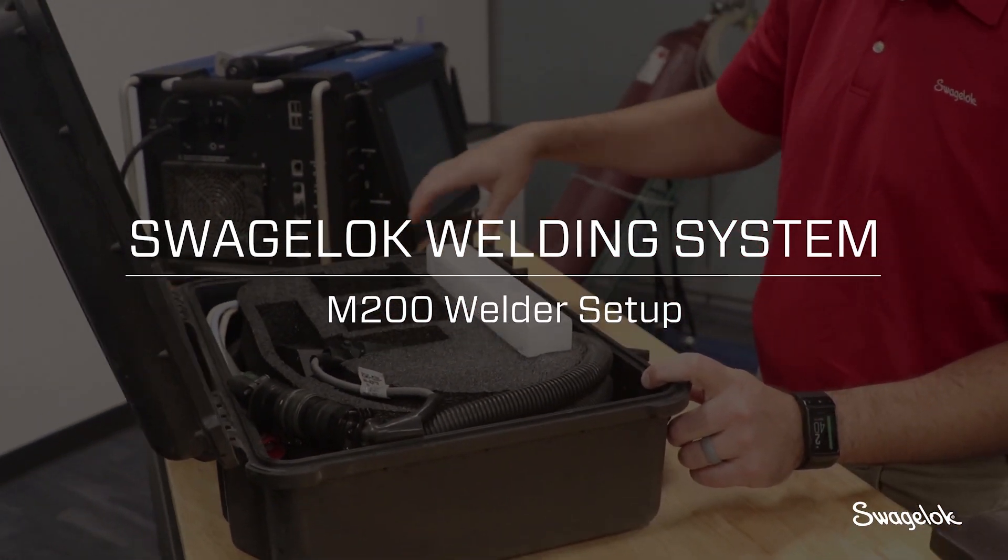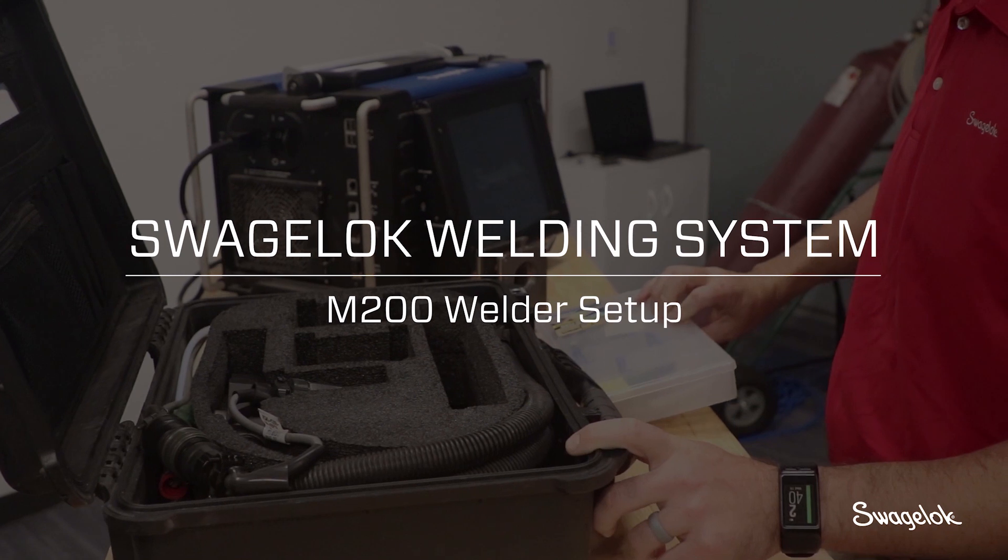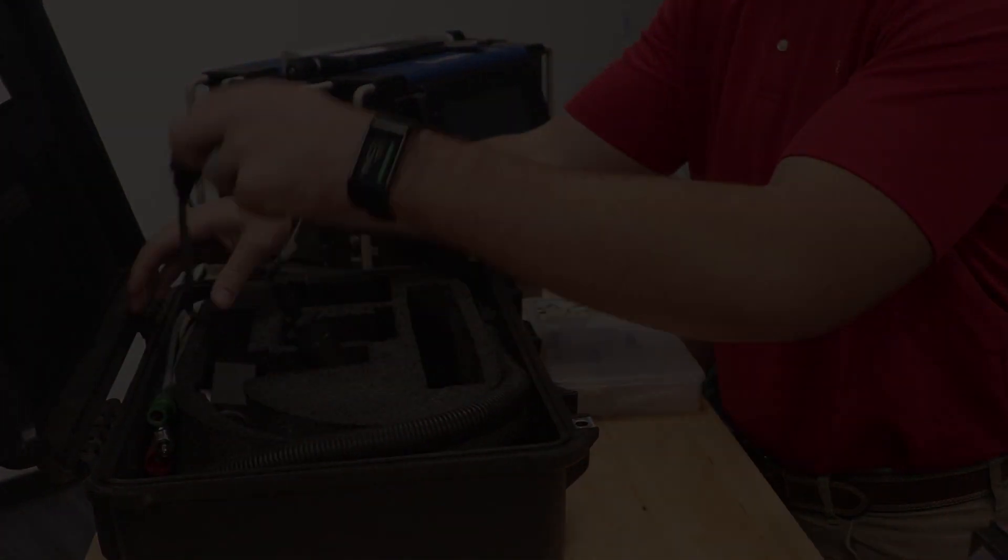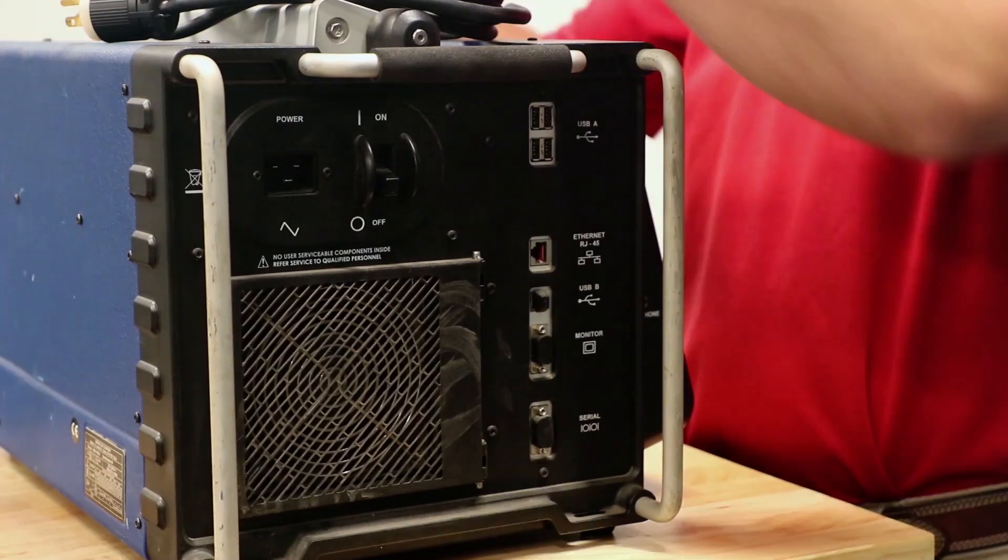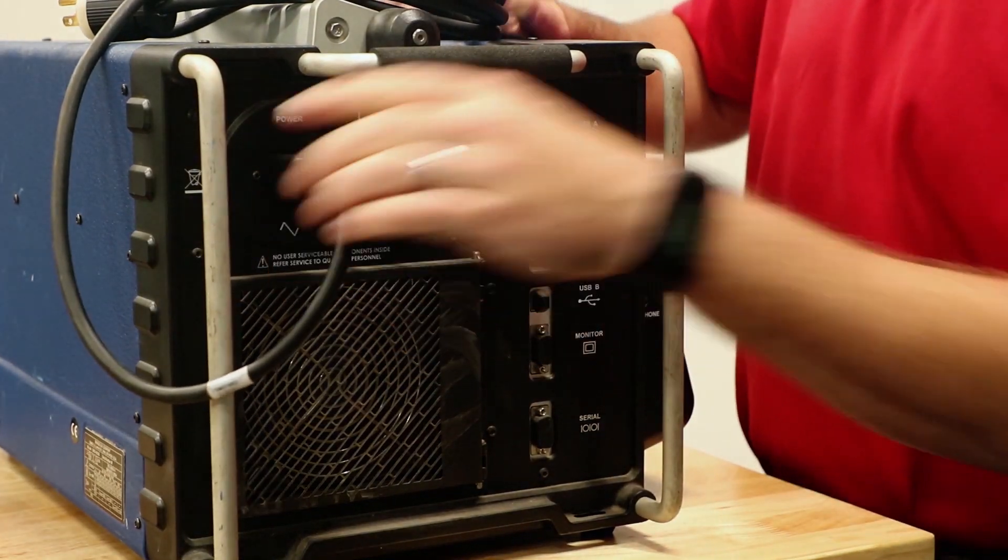The Swagelok M200 Orbital Welder is the most current version of our Swagelok orbital welding capabilities, which have existed since the 1980s. This is a technology that we've been working on for a long time and are really familiar with.